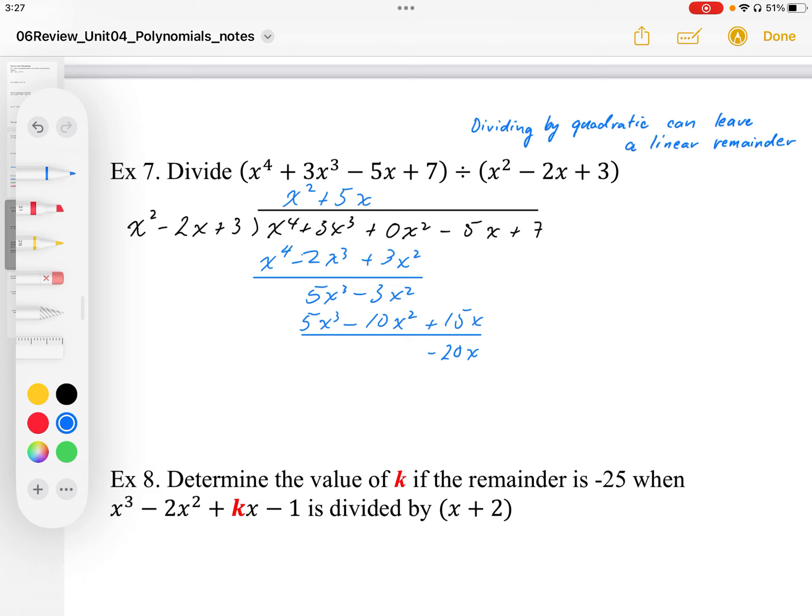This becomes minus 10x squared plus 15x. Subtract, I end up with negative 20x. And then multiplying, this is going to be negative 3 minus negative 10, that's going to be positive 7x squared minus 20x. And then again, match that last coefficient, it's going to be plus 7. 7x squared minus 14x plus 21. And then notice that our remainder, we're going to end up with negative 6x, 7 minus 21 is minus 14. So the remainder then works out to be negative 6x minus 14, and that is a linear remainder by dividing by a quadratic.